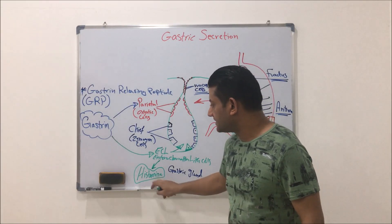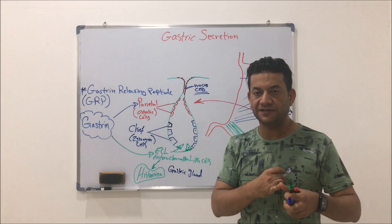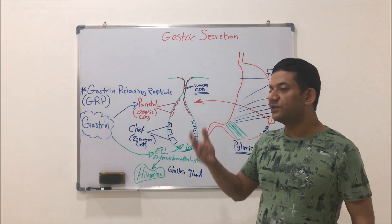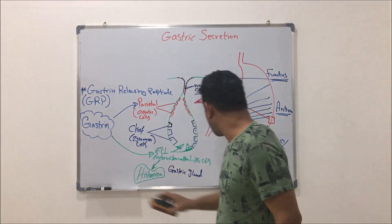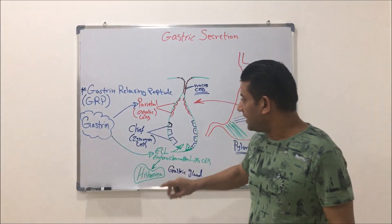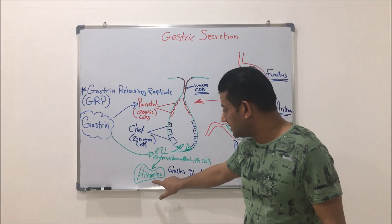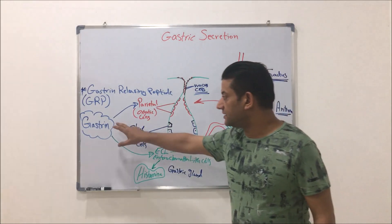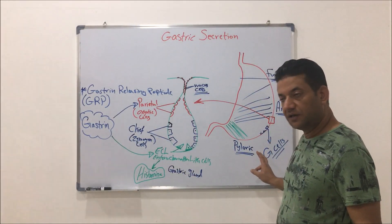Histamine is the second factor. We have three phases — cephalic, gastric, and intestinal — and three factors. The first factor is the hormone gastrin, and the second factor is histamine, which is released after gastrin has been secreted from G cells.